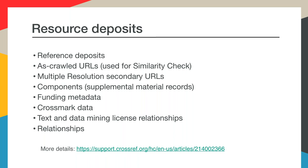Whenever you want to register content with us, you must deposit metadata and identifiers, and you can include all other metadata in your initial registration as well. But some types of metadata can be added after you have registered the content — things like including references if you want to participate in our Cited-by service, funding data, components which are supplemental material records, Crossmark information, text mining, and relationships. You can provide little pieces of metadata that get added to your existing deposits without having to re-deposit the full XML for an article or an issue.